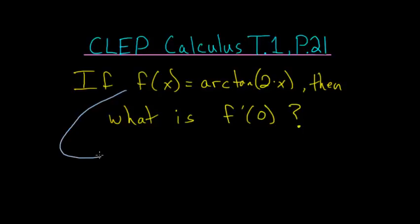So let's first start by rewriting this function as y is equal to the arctangent of 2 times x. And then what we'll do is essentially take a tangent of each side, so that we have the tangent of y is equal to 2x.